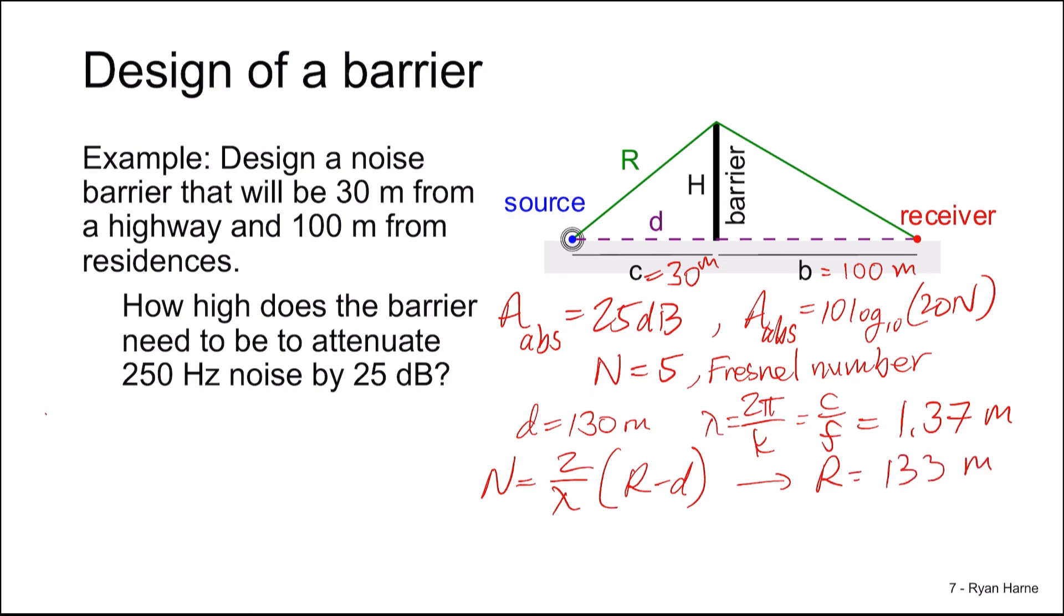R is able to be determined through another way. Through trigonometric identities, R is C squared plus H squared square root plus B squared plus H squared square root. So we know R, C, and B. How can we then solve for H, the height of the barrier?